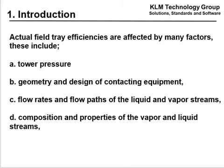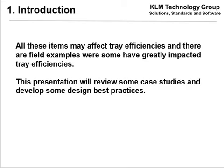Actual field efficiencies are affected by many factors. When you run a simulation, typically you run it at 100% efficiency, but when you go to the field, trays are never going to be 100% efficient. Things that affect this include tire pressure, the geometry and design of the contact equipment, flow rates and flow paths of the liquid and vapor streams, and composition and properties of the vapor and liquid streams. There are field examples that have greatly impacted tray efficiencies.